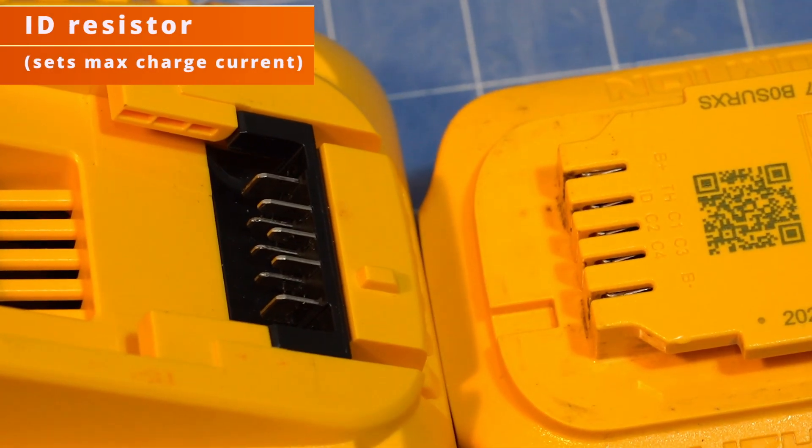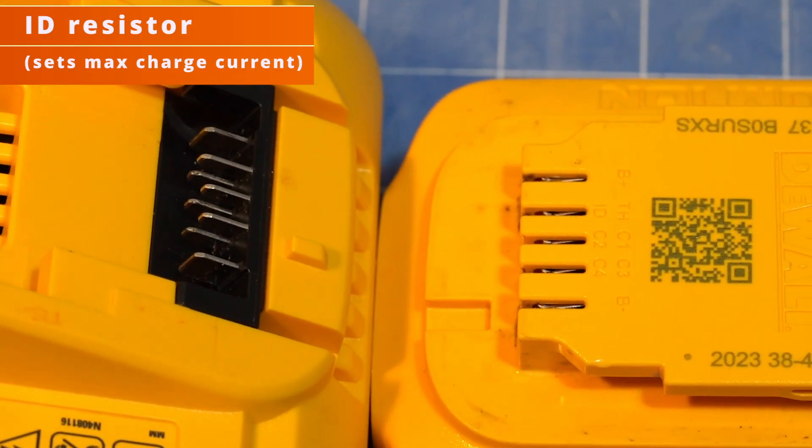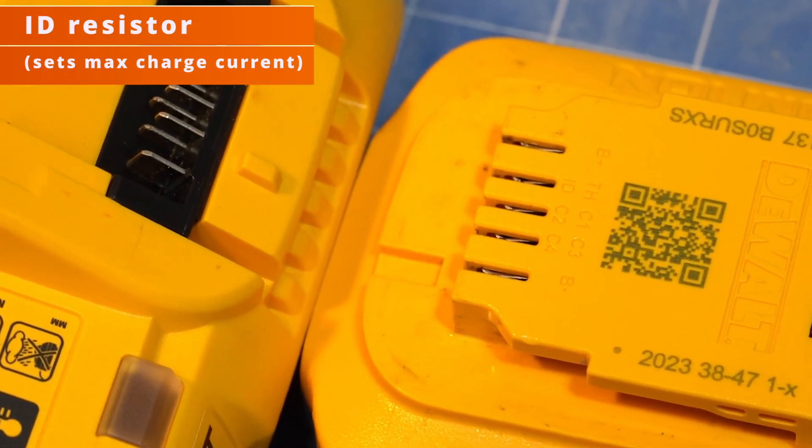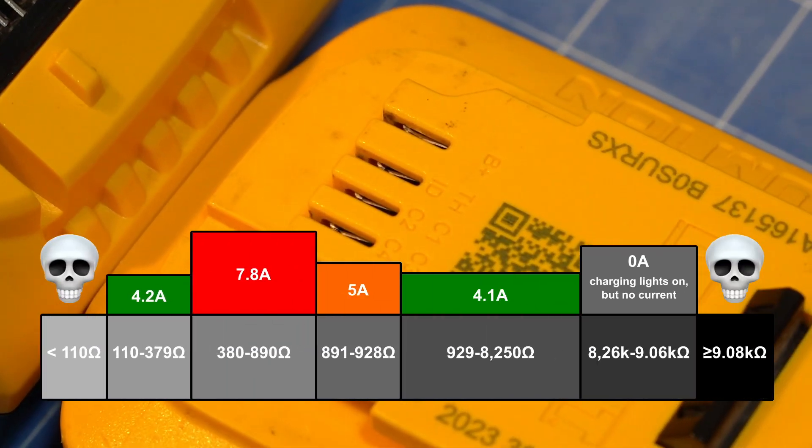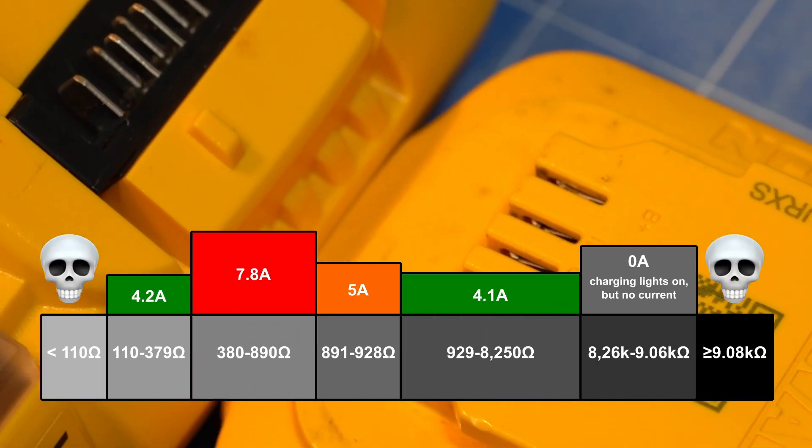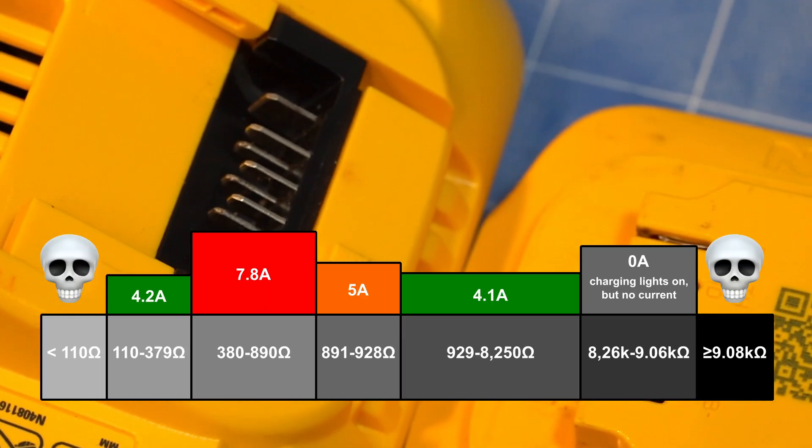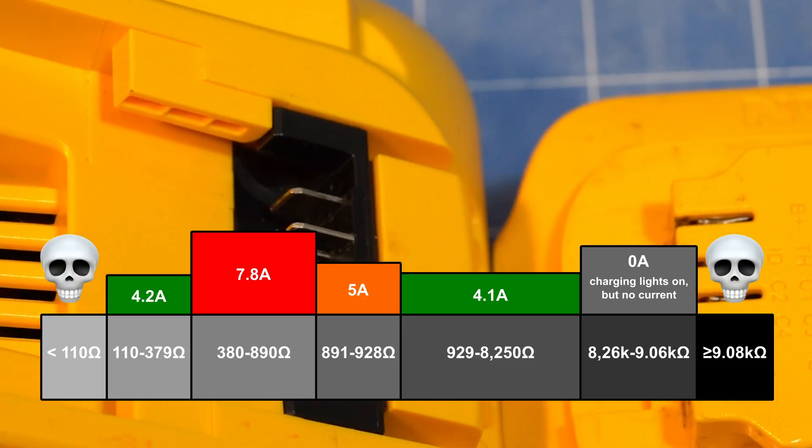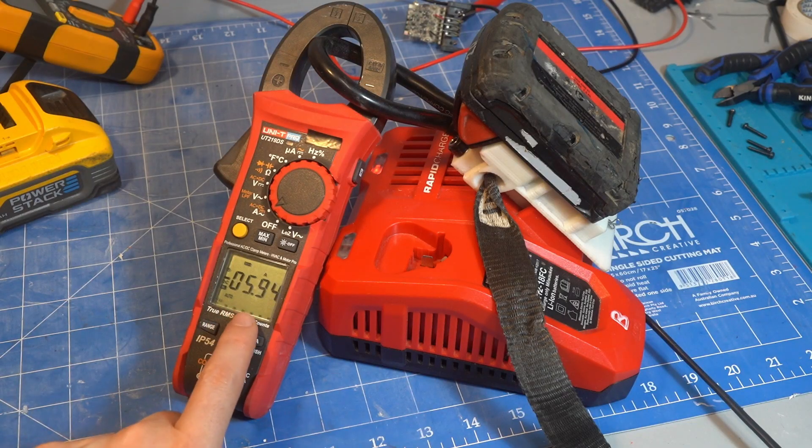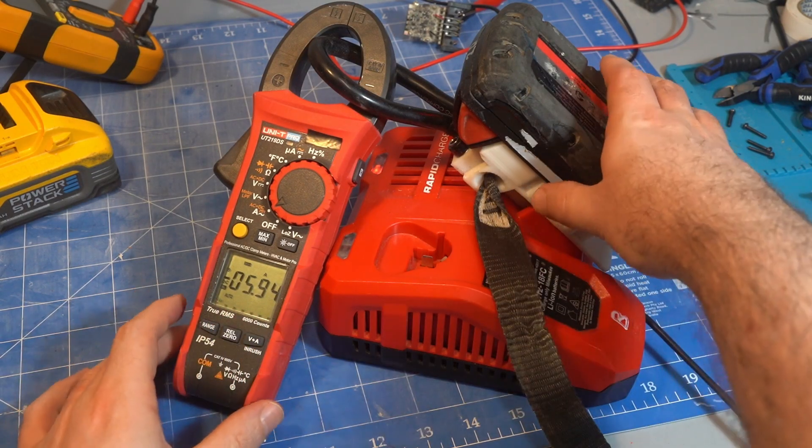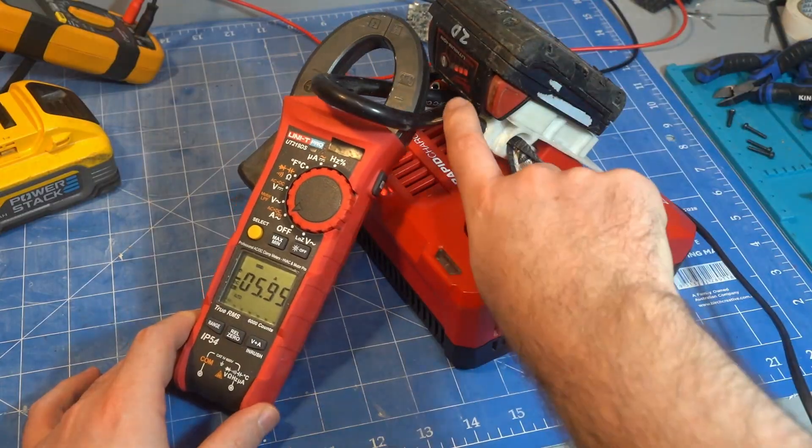DeWalt chargers make use of all the pins. The ID pin is used to tell the charger what the max charging current should be. With the DCB118 which is an 8 amp charger I got the following charging currents for each range of ID resistance. The 2 amp hour charges at 4 amps which is what the cells are rated to. This is a minor win for DeWalt over Milwaukee as Milwaukee allows their 2 amp to charge at 6 amps on the rapid charger.